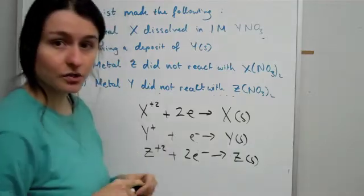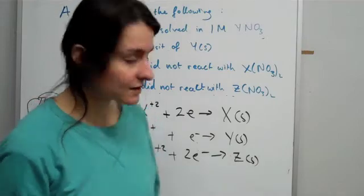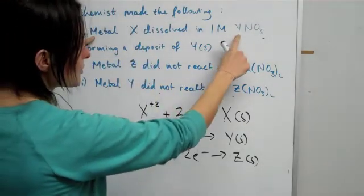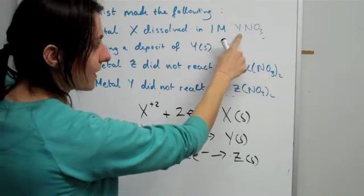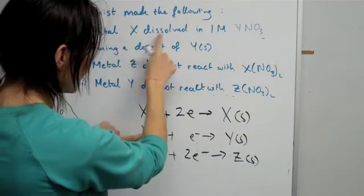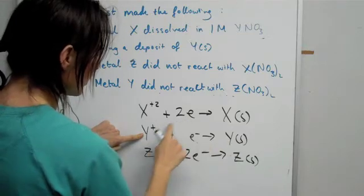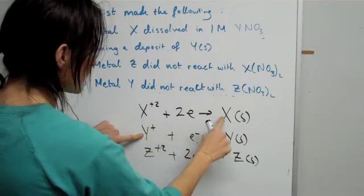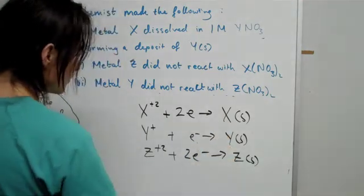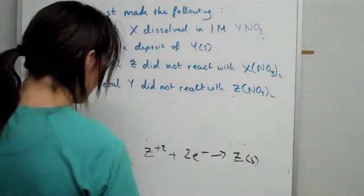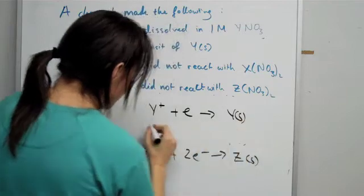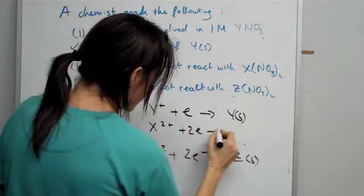Okay, so let's look at how we're going to arrange these in order, remembering that the most reactive metal will be at the very bottom here. Now metal X actually dissolved into this solution of Y ions. So this arrangement won't work - X must be underneath Y. Otherwise, you'd have to move uphill to get to X. So we're going to flip these two equations around and rewrite them. Y⁺ + e⁻ → Y(s), and then X²⁺ + 2e⁻ → X(s).